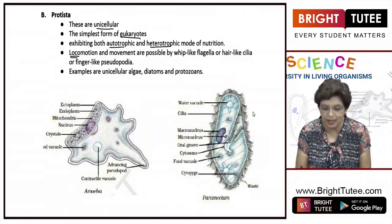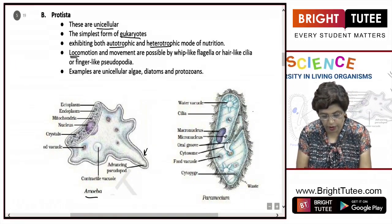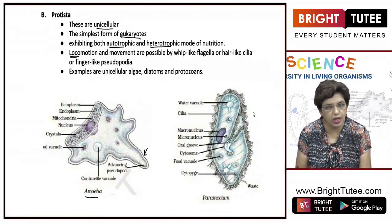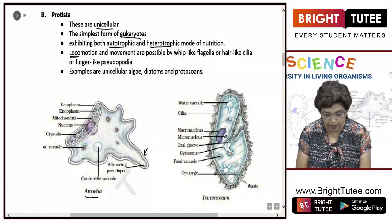Look at this figure. This is Amoeba. They can produce pseudopodia which helps in acquiring food and also in locomotion. You can see they have nucleus and other membrane-bound organelles.